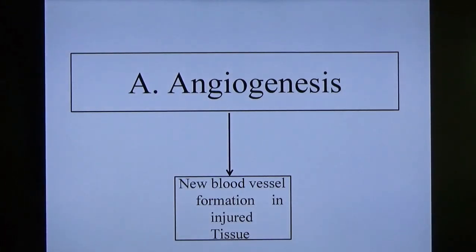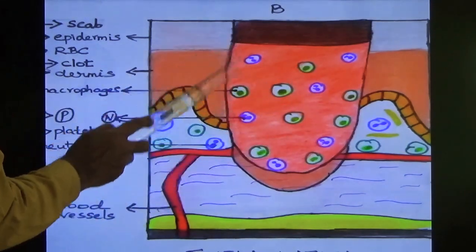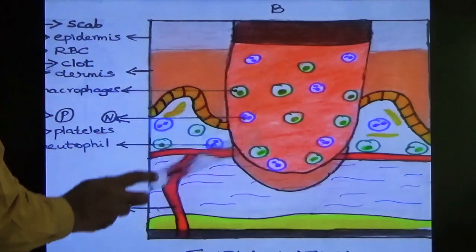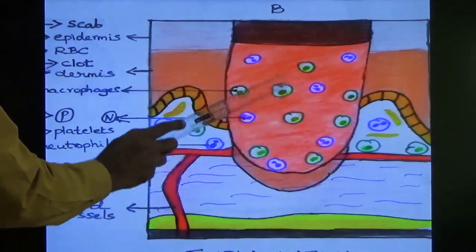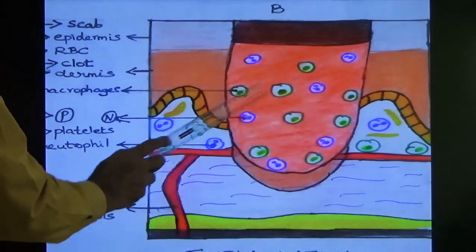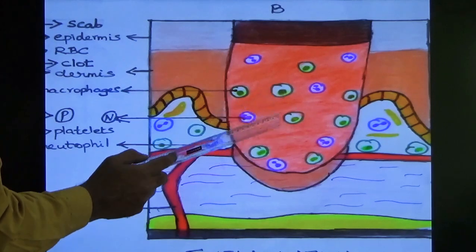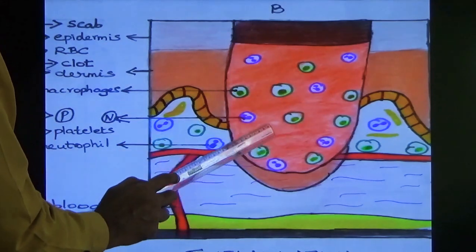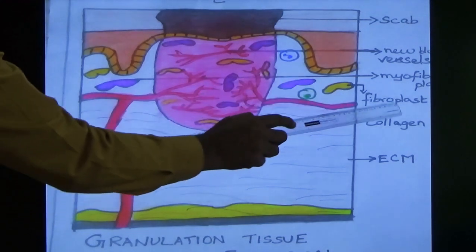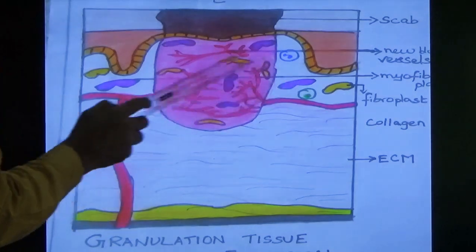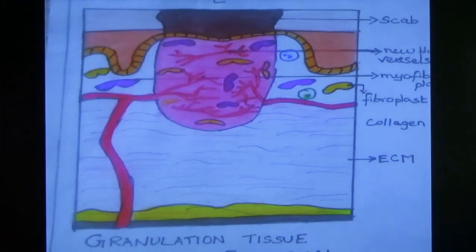Why does angiogenesis occur in granulation tissue? After the injury there is inflammation. The blood vessels also become injured. For granulation tissue formation, there is a need for nutrition. Blood vessels provide nutrition. So new blood vessel formation occurs — these new blood vessels provide nutrition to fibroblasts. The fibroblast then synthesizes collagen. So angiogenesis is the beginning stage of granulation tissue formation. The formation of capillary sprouting occurs via many growth factors: vascular endothelial growth factor (VEGF), platelet-derived growth factor (PDGF), fibroblast growth factor (FGF), and angiopoietin-1.